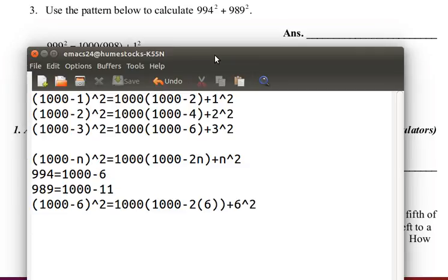Now, you just need to calculate this. 1000, 1000 minus 2 times 6, 2 times 6 is 12, plus 6 squared. 6 squared is 36.